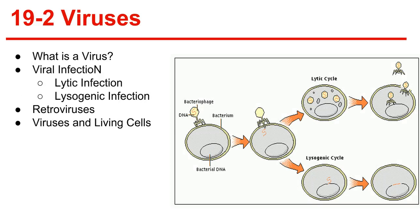Section 19-2, Viruses. What is a virus? A virus is technically not alive; they are particles of a nucleic acid, protein, and in some cases lipids, and they can reproduce only by infecting living cells. A typical virus is composed of a core of DNA or RNA surrounded by a protein coat called the capsid, which includes proteins that allow the virus to enter a host cell. Bacteriophages are viruses that infect bacteria.